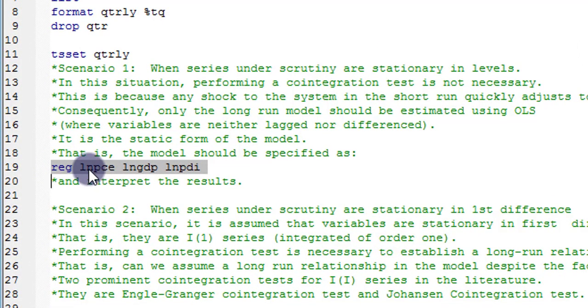My dependent variable in this case is the log of PCE. GDP is one of the explanatory variables and PDI. So I'm only specifying the functional form, which is a log-log form, in their static nature.